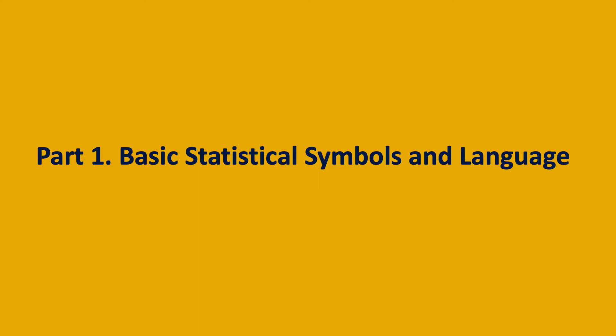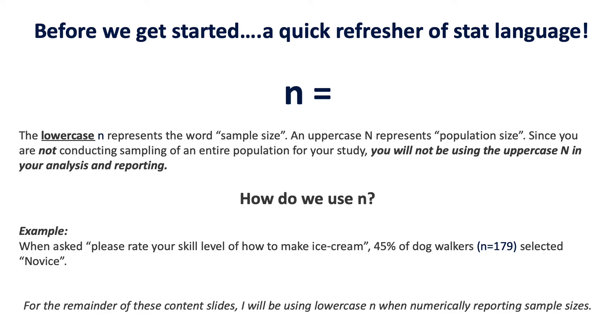Let's do a quick refresher on statistical language. We use lowercase n to represent sample size and uppercase N to represent population size. Since you are not conducting sampling from an entire population for your study, you're not going to be using that uppercase N — you're not sampling every single teacher in your school or every stakeholder in your agency.